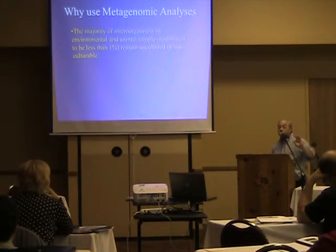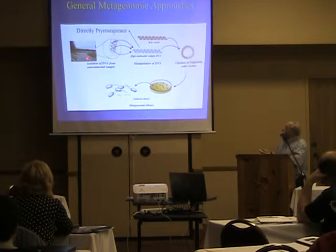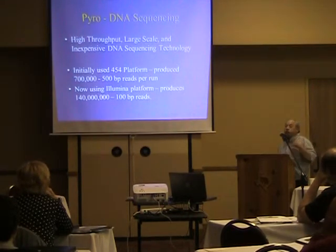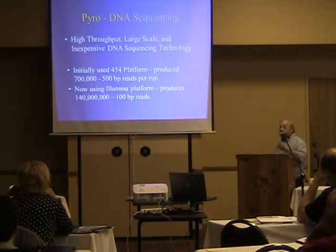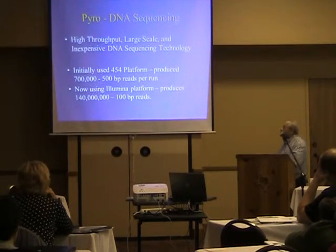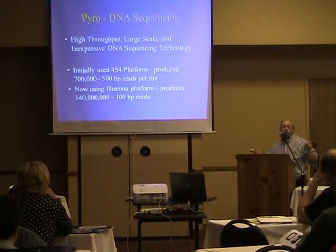There are two standard ways of doing this. You take a water sample — for example from the Mississippi River at Lake Itasca — isolate total DNA, and either clone it into a vector making a clone library, or now directly sequence the DNA. High-throughput, large-scale, inexpensive DNA sequencing technology really helps. Initially we used the 454 platform, which produced about 700,000 DNA sequences per week at ~500 base pairs in length, costing $13,000 per run with 12 samples per analysis.